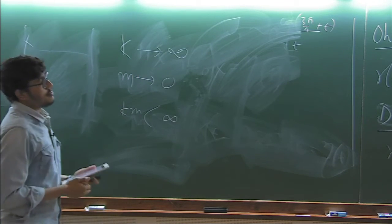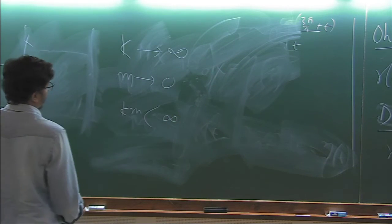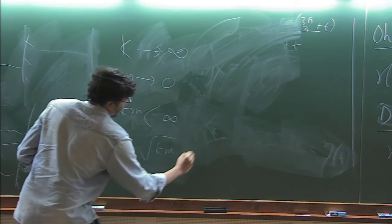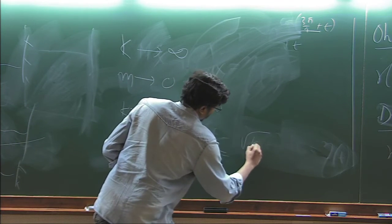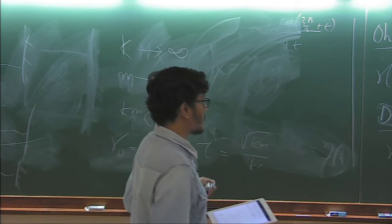So then one can actually reduce these kernels to that, to this particular kernel. Where gamma 0 will become basically square root of km, and tau will become square root of km by k prime. So this is one of our achievements in this work.